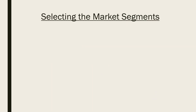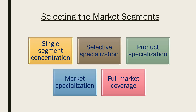The next topic is selecting a market segment. There are five types: single segment concentration, selective specialization, product specialization, market specialization, and full market coverage. We are going to learn each in detail.